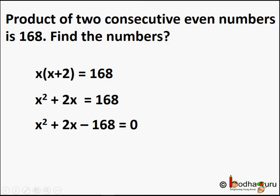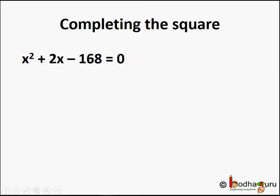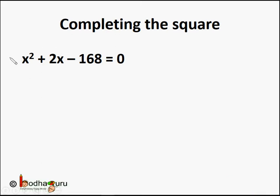We now have a quadratic equation in the standard form ax squared plus bx plus c equal to 0. Now let's explore an easy method of solving this quadratic equation — the method is called the completing square method. Let us try to understand how this method works.